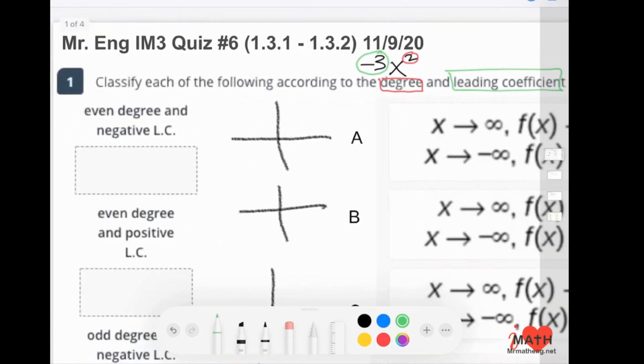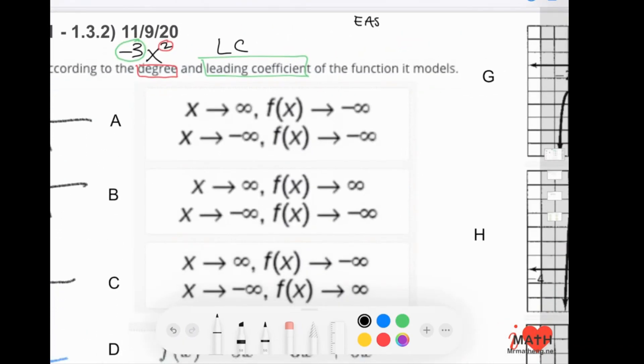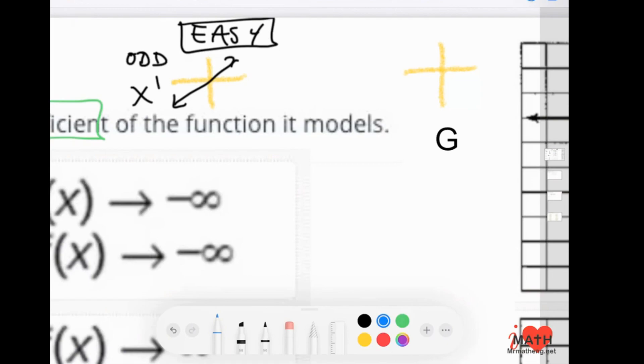And then we have to match it with all of these. We talked about how LC is leading coefficient. I first want to knock out the easiest. Odd is x to the first, and that graph looks like a linear. And then the easiest even that we know is x to the second, which is a quadratic. That number two is even. You'll notice that it'll start up and then end up.